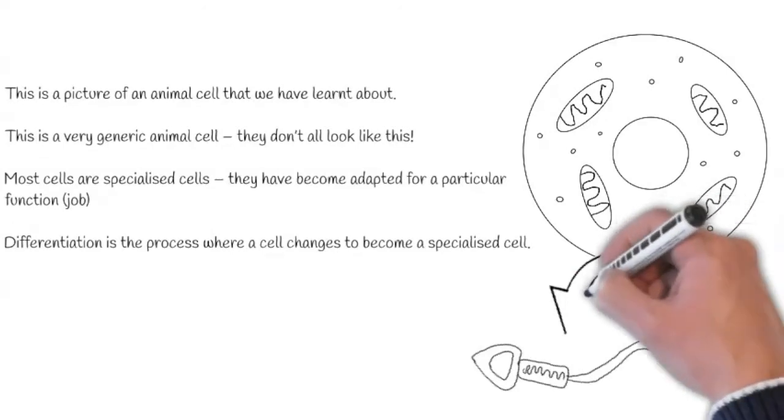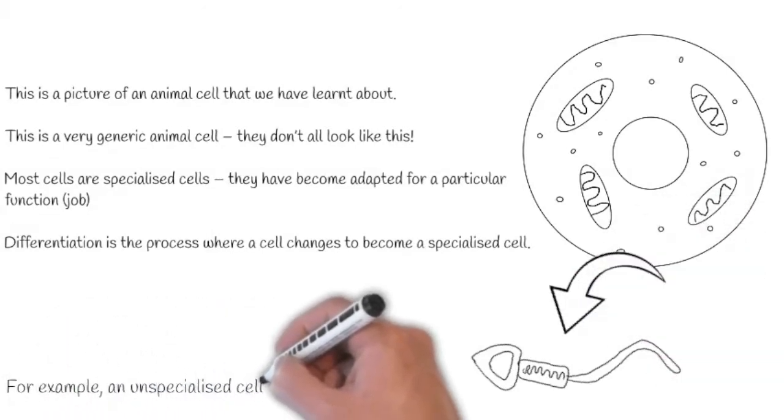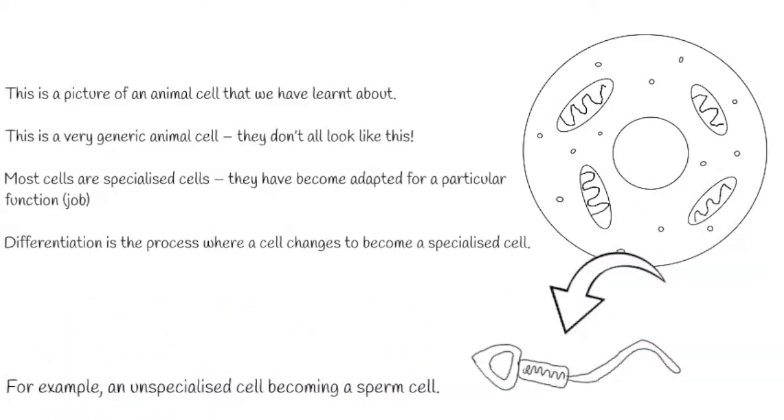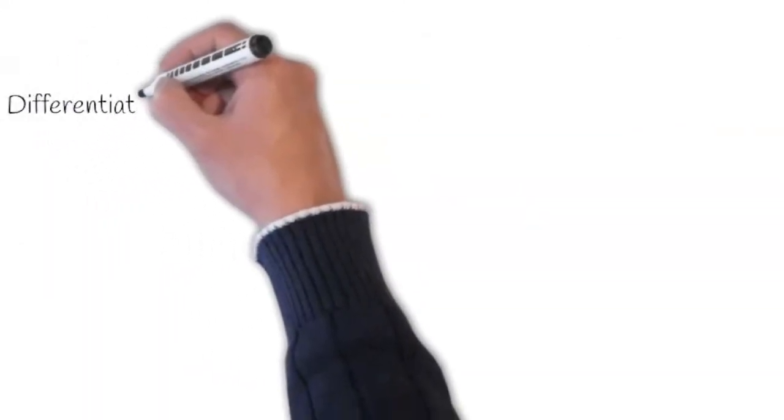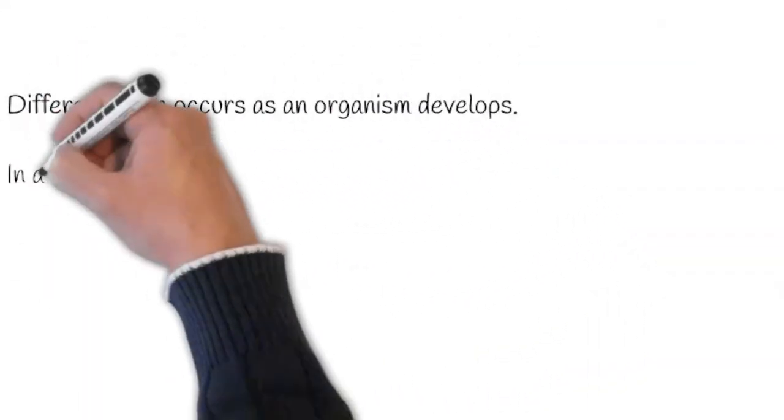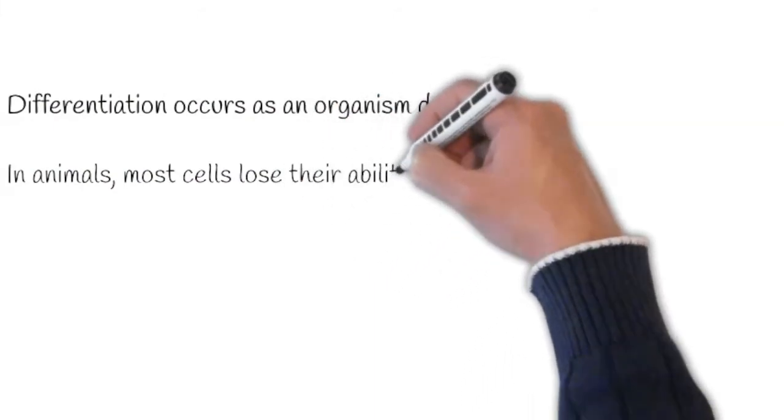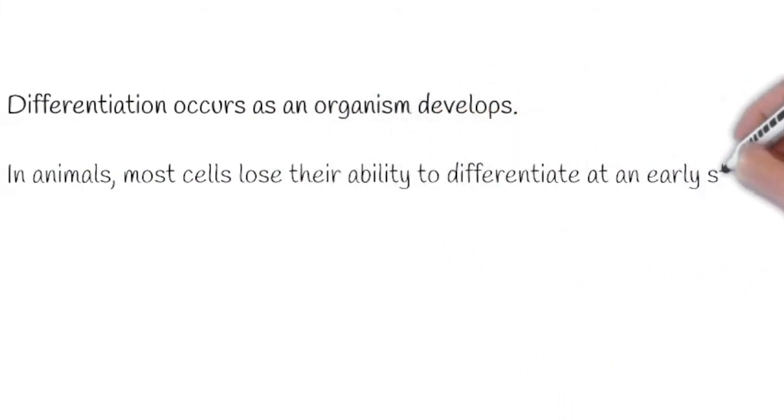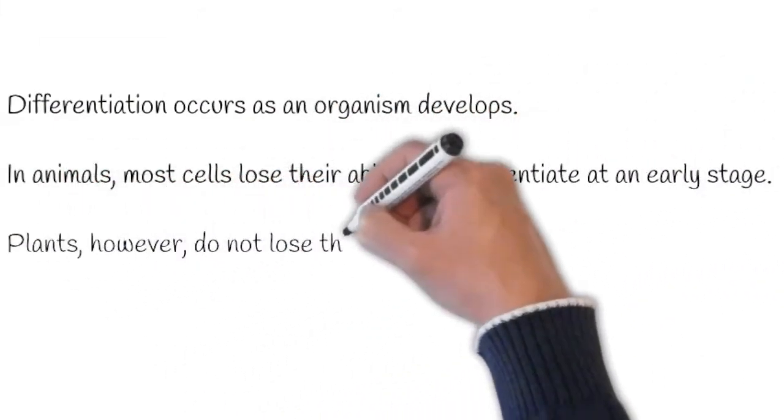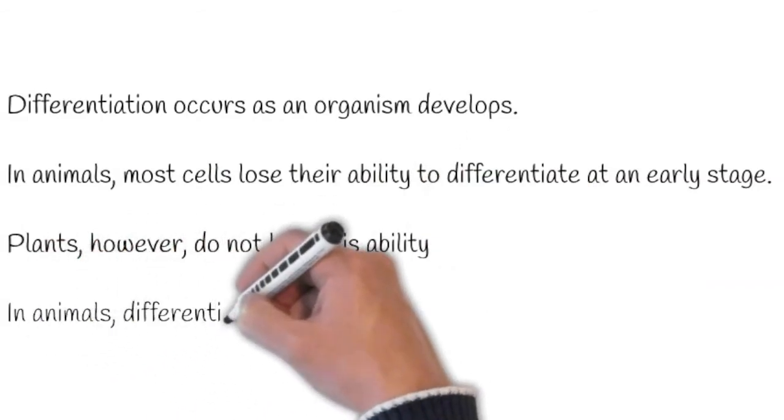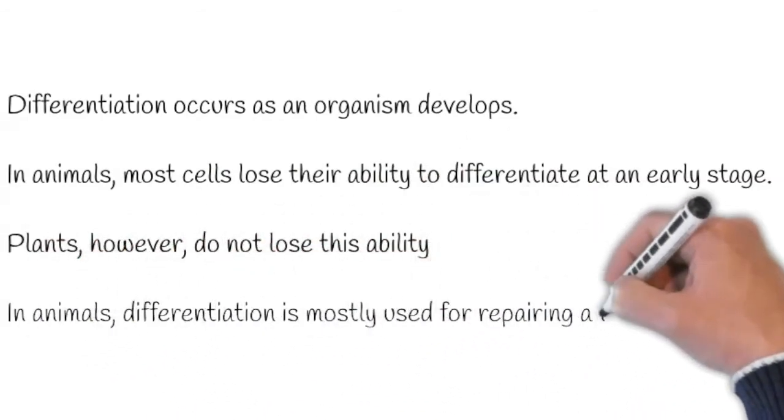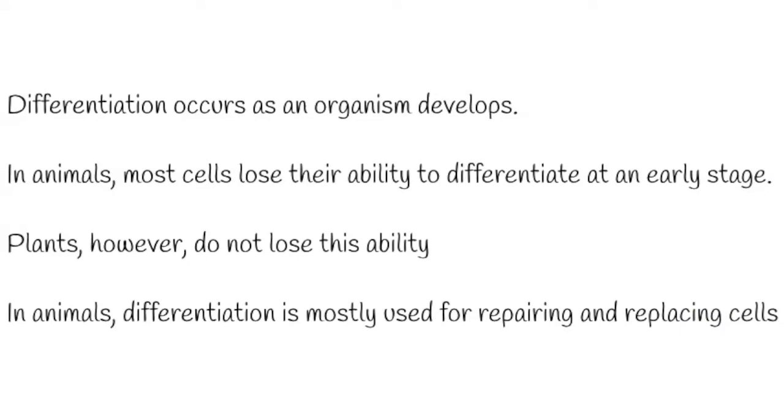Look at this example here. We have an unspecialised cell becoming a sperm cell. Differentiation occurs as an organism develops. In animals, most cells lose their ability to differentiate at an early stage. Plants, however, do not lose this ability. In animals, differentiation is mostly used for repairing and replacing cells.